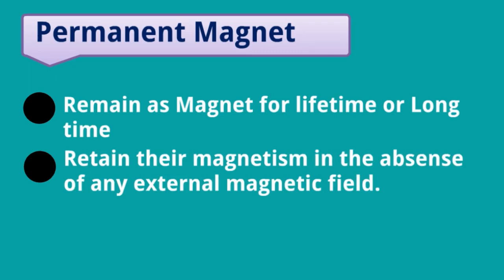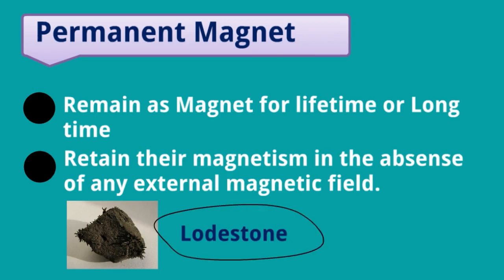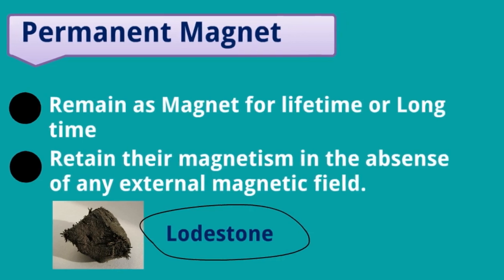Permanent magnets retain their magnetism or their characteristics in the absence of any external magnetic field. If we keep a magnet in any place, there is no necessity of any external magnet or magnetic field for it to remain its characteristics. For example, lodestone — if you keep it somewhere, it retains its characteristics without any help of any other magnet or magnetic field.